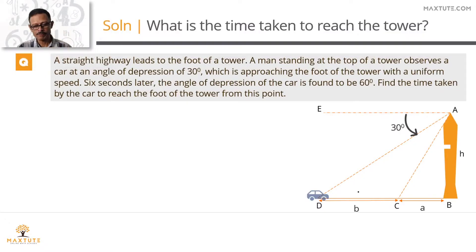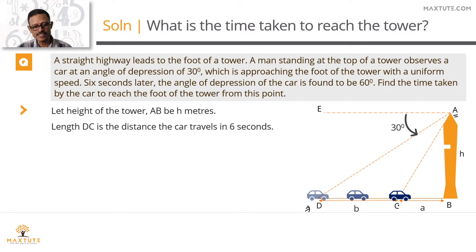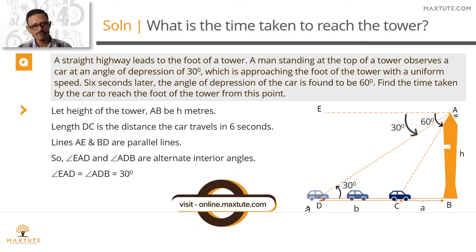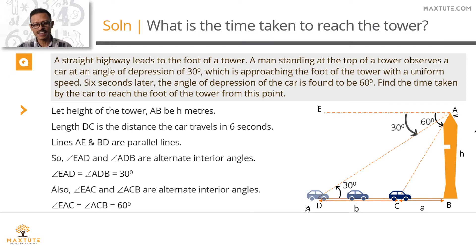Let's set up a schematic. AB is the tower; let the height be H meters. From point A, the person observes the car. The first point of observation is D, with angle of depression 30 degrees. The car approaches and in 6 seconds reaches point C, where the angle of depression from A is 60 degrees. Since AE and BD are parallel lines with AD as a transversal, alternate interior angles give angle ADB = 30 degrees. Similarly, angle ACB = 60 degrees.